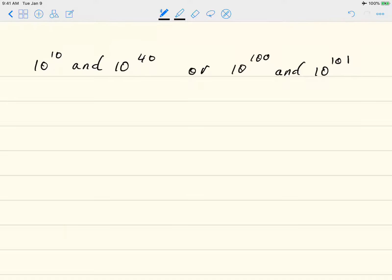So we have 10 to the 10 and 10 to the 40th, or 10 to the 100 and 10 to the 101. And we want to determine which of them is closer in distance. So either 10 to the 10 or 10 to the 40, or 10 to the 100 and 10 to the 101.